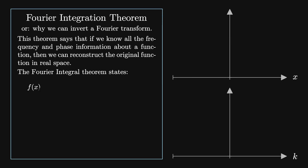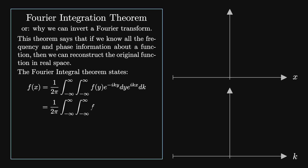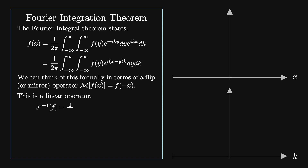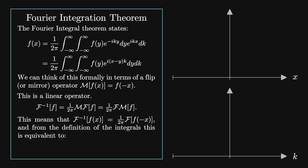The Fourier integral theorem states: f of x equals 1 over 2 pi times the integral from minus infinity to infinity of the integral from minus infinity to infinity of f of y e to the minus i k y dy, times e to the i k x dk. This equals 1 over 2 pi times the integral from minus infinity to infinity of f of y e to the i k times x minus y dy dk. We can think of this formally in terms of a flip or mirror operator M, which takes f of x to f of minus x. This means that F-inverse of F of f of x equals f of x.